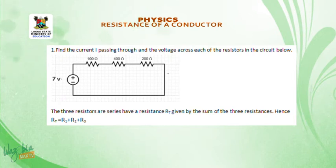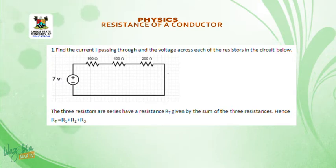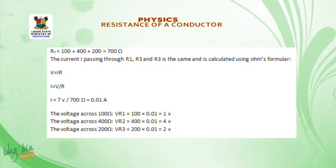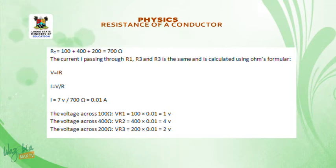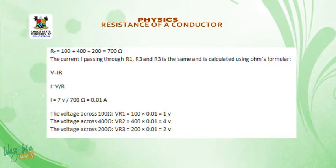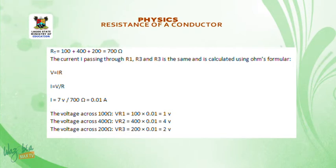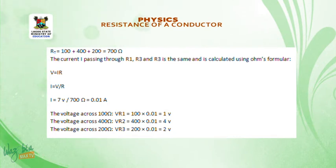To calculate resistance in series: RT equals R1 plus R2 plus R3. So RT equals 100 plus 400 plus 200, which equals 700 ohms. The current passing through R1, R2, R3 is the same, calculated using Ohm's law: V equals IR, so I equals V/R equals 7 divided by 700, giving a current of 0.01 ampere.